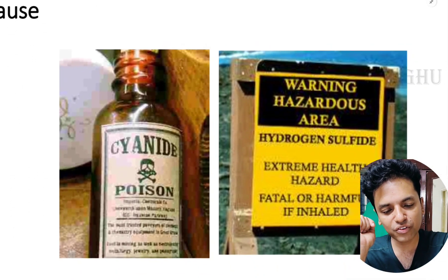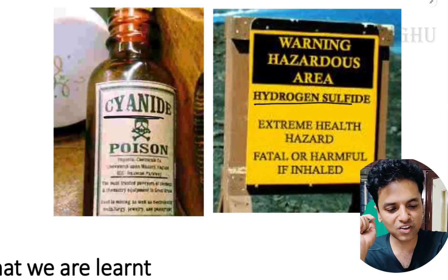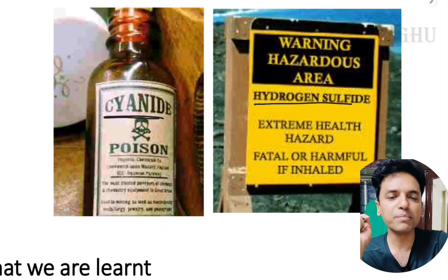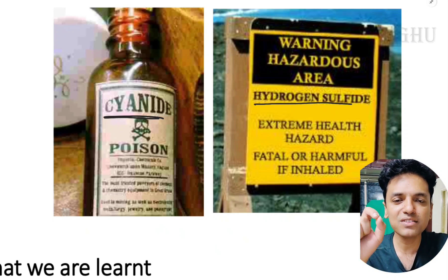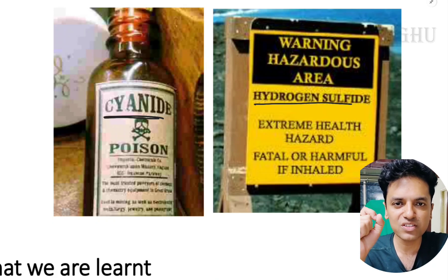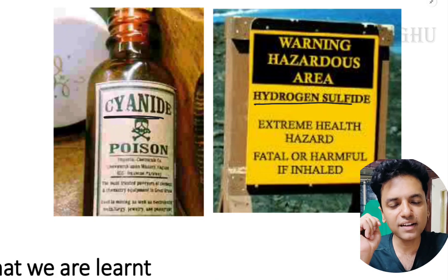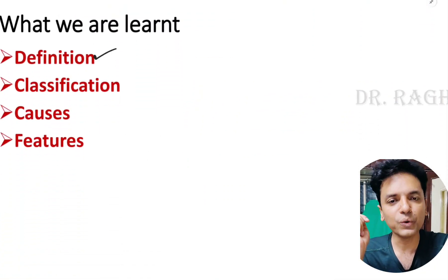There are two important causes of histotoxic hypoxia: cyanide poisoning and hydrogen sulfide poisoning. Both cause paralysis of the electron transport chain, which is responsible for oxygen utilization by the tissues. Remember these two poisonings — cyanide and hydrogen sulfide.